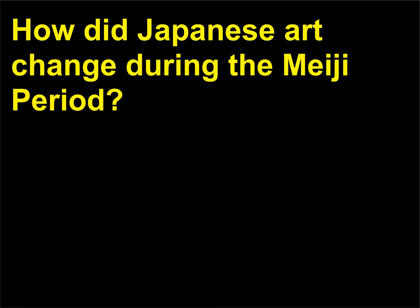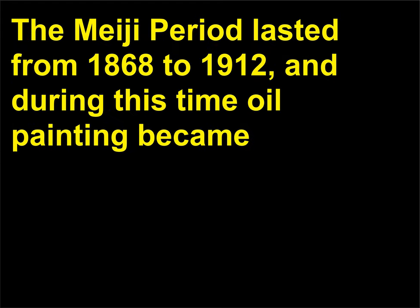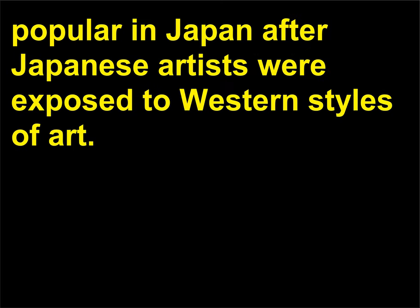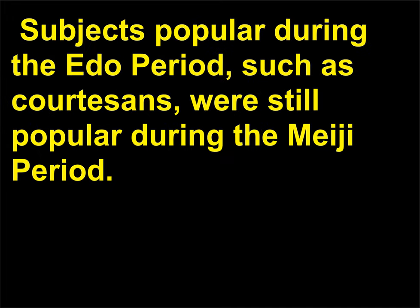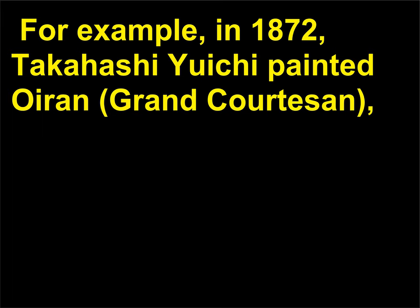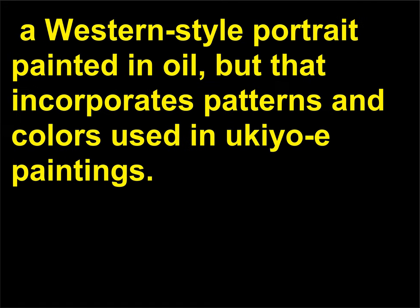How did Japanese art change during the Meiji period? The Meiji period lasted from 1868 to 1912, and during this time oil painting became popular in Japan after Japanese artists were exposed to Western styles of art. Subjects popular during the Edo period, such as courtesans, were still popular during the Meiji period. For example, in 1872, Takahashi Yuichi painted Oiran, or Grand Courtesan — a western-style portrait painted in oil but that incorporates patterns and colors used in ukiyo-e paintings.